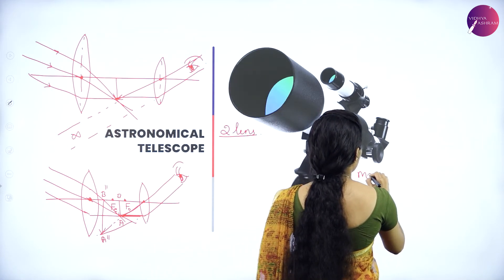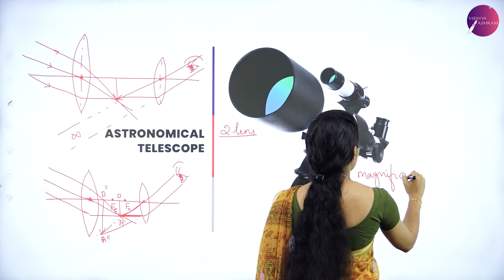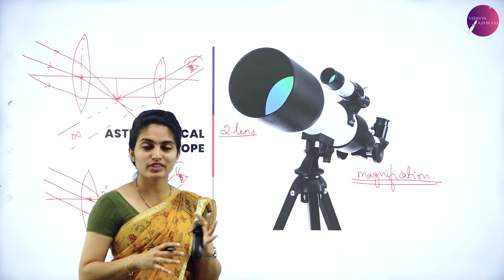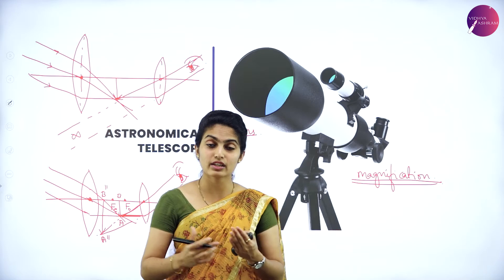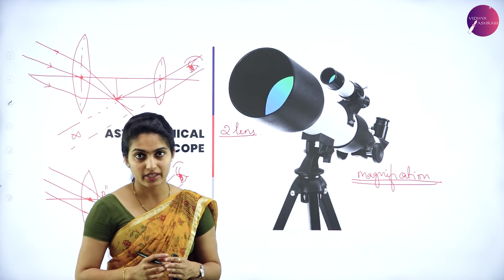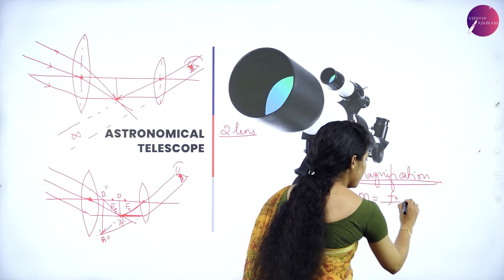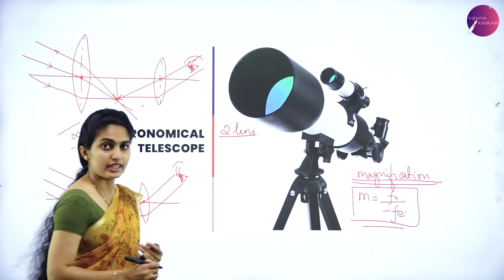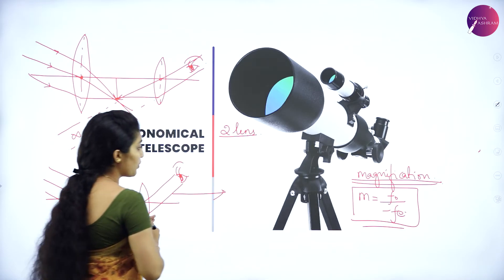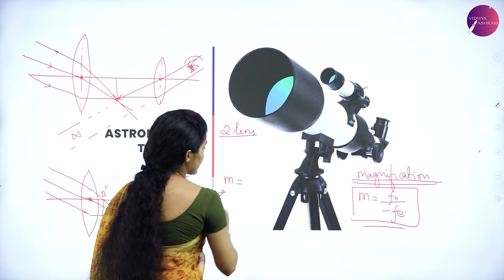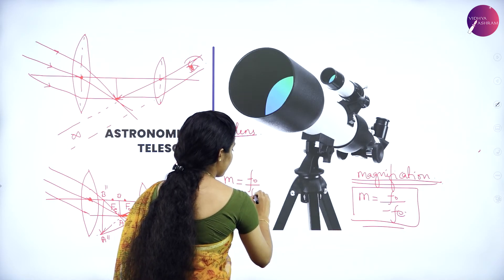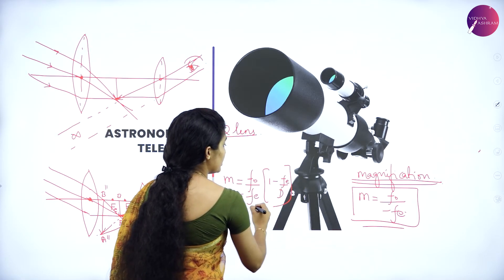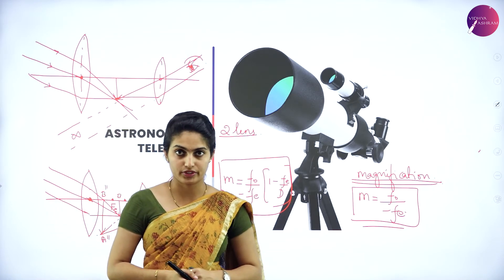For the astronomical telescope, the magnification is given for two cases. For the image formed at infinity (far point): M = F₀/Fₑ. For the image formed at the near point: M = (F₀/Fₑ) × (1 − Fₑ/D). These are the magnification equations for the astronomical telescope.